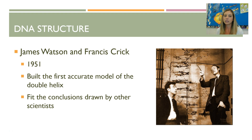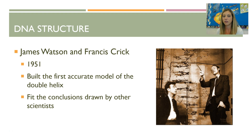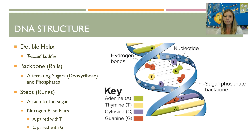Watson and Crick essentially put the pieces of the puzzle together. They didn't do a whole lot of research on their own — they collected research from various scientists, though whether that was done ethically is questionable. They took the conclusions of other scientists, put it all together to describe the structure of DNA, built the first accurate model, and won a Nobel Prize.